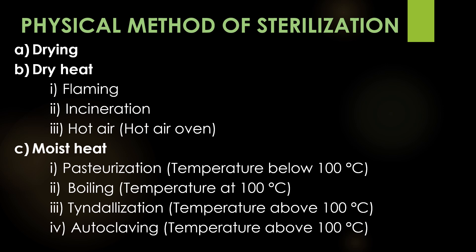Totally there are 5 methods of physical sterilization. The first method is drying. The second method is dry heat; the dry heat method includes flaming, incineration, and sterilization by hot air using a hot air oven. The third method is moist heat. It includes pasteurization at temperatures below 100 degrees Celsius, and boiling at a temperature of 100 degrees Celsius.